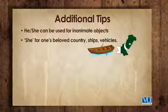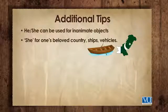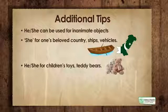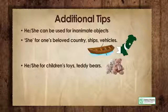کچھ additional tips: he or she can be used for inanimate objects بھی۔ جیسے اپنے ملک کی بات ہو، کسی کشتی کی یا کسی گاڑی کی — اس کے لیے she بھی استعمال کیا جا سکتا ہے۔ عام طور پر rule یہ ہے کہ it چیزوں کے لیے ہوتا ہے، لیکن especially جو چیزیں nurturing ہیں جیسے homeland یا motherland — اس کے لیے she یا her use کر سکتے ہیں۔ بچوں کے toys، teddy bears — you can treat them like they're living things۔